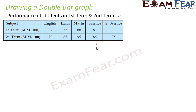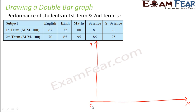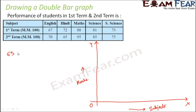First we will draw the x-axis and the y-axis. On the x-axis we represent the subjects and on the y-axis we represent the marks. Now we have to choose a suitable scale. The minimum marks we can see is 65 and the maximum is 95, so we need to represent values from 65 to 95.